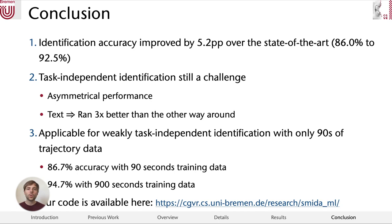To conclude, in our work, we first improved the state-of-the-art task-dependent identification by 5.2 percentage points. Second, we found that task-independent identification is not currently possible with the classifiers we tested. Actually, the performance is highly asymmetrical and depends on the task that was used for training and for testing. Last, we analyzed how many training and testing data is needed for an accurate identification and found that with only 90 seconds of training and testing data, an accuracy of over 86% can be achieved.